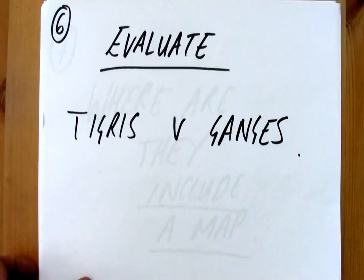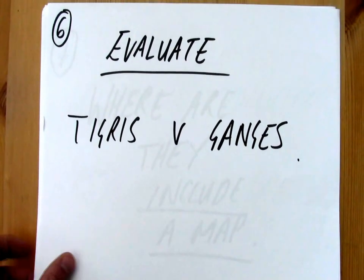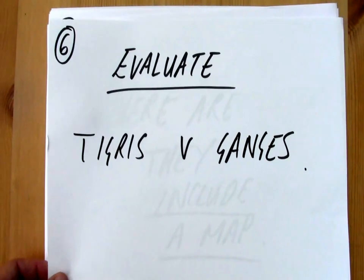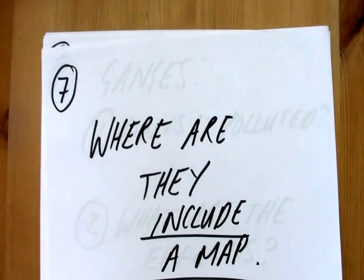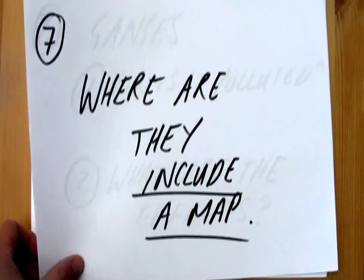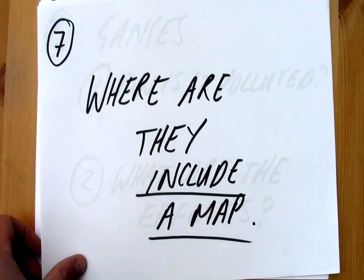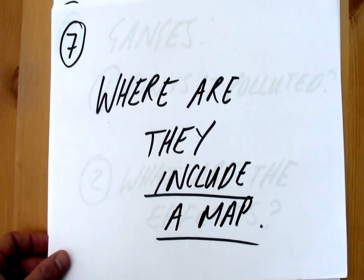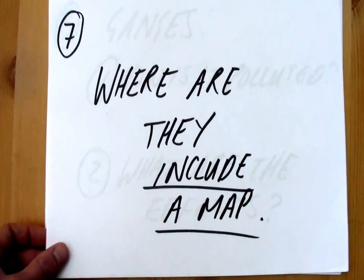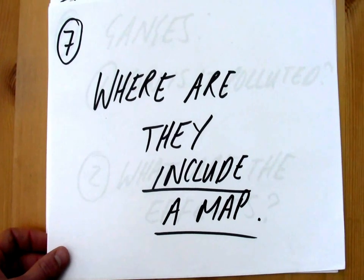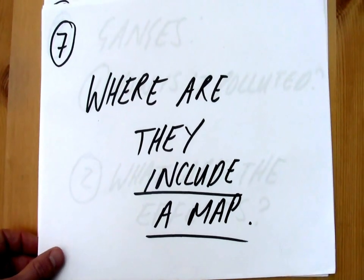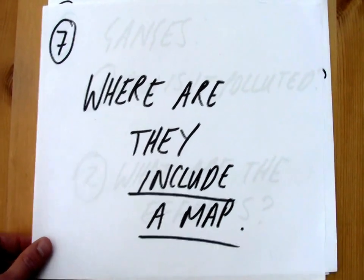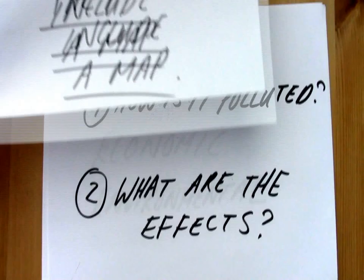Now in order to evaluate we need to look at both the river Tigris and the river Ganges, and in order to do that we need to give their geographical location. I've underlined 'include a map' because it's really important as a geographer that you are clear on exactly whereabouts in the world you are looking at.